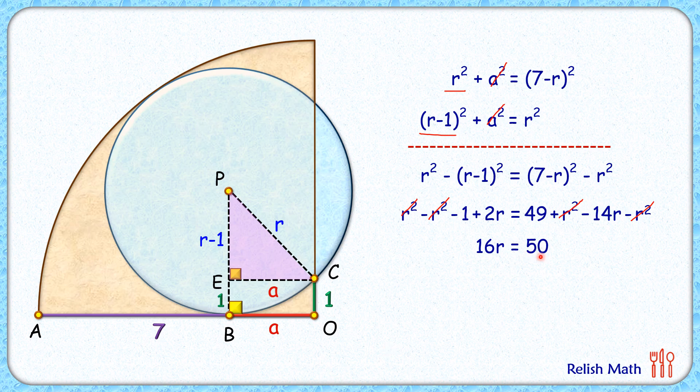So r will be 50 upon 16, or 25 by 8, and in terms of decimal, r will be 3.125 centimeters. And that's our answer. I hope you enjoyed the solution. I will see you in the next video. Till then, tata bye bye.